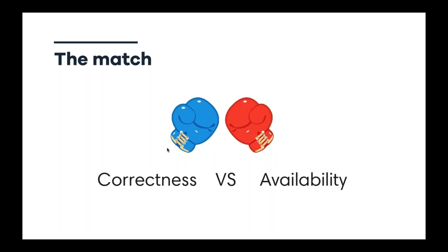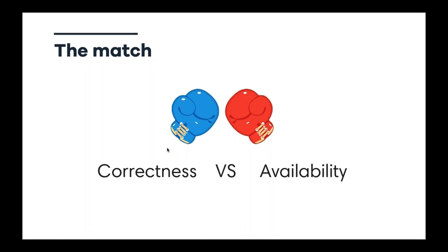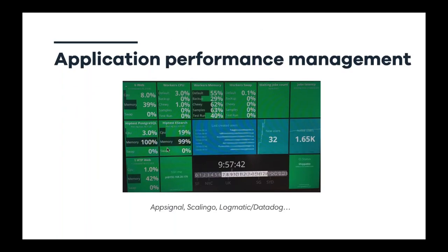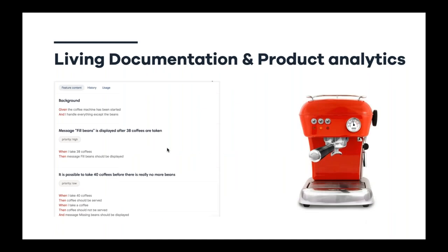If we have a bug or issues with a new feature, we can deploy a fix very quickly. That means we must continuously monitor application performance. For this we use tools like AppSignal, ScalingGo, Logmatic, and Datadog. Alert Site from SmartBear can also be very useful to make sure the application works the way it's supposed to and stays available.